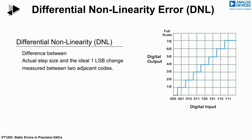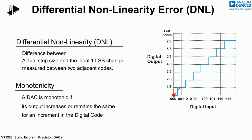A key requirement of a DAC is that it is monotonic. This means that the analog output voltage should increase or remain the same as the DAC's digital code increases. If the output of a DAC decreases as the digital code increases, the DAC is said to be non-monotonic.